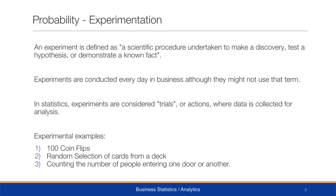In probability, we have something called experimentation. An experiment is defined as a scientific procedure undertaken to make a discovery, test a hypothesis, or demonstrate a known fact. Many of you will be aware of a laboratory experiment in which we take one drug and compare it to another. In business, we might use a behavioral lab to test customers' reactions towards certain advertisements. These experiments are conducted every day in business, even though they might not use that term.